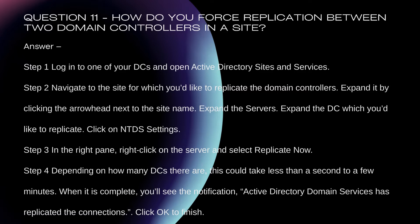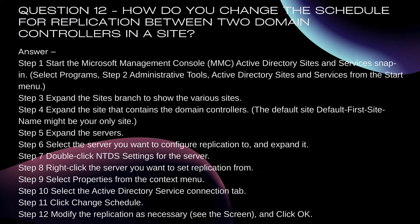Question 12: How do you change the schedule for replication between two domain controllers in a site? Step 1: Start the Microsoft Management Console (MMC) Active Directory Sites and Services snap-in, select Programs. Step 2: Administrative Tools > Active Directory Sites and Services from the Start menu.